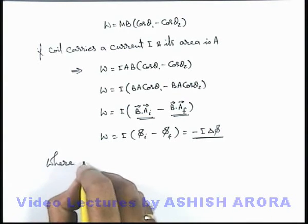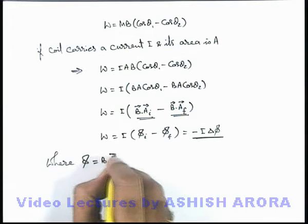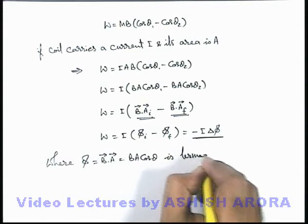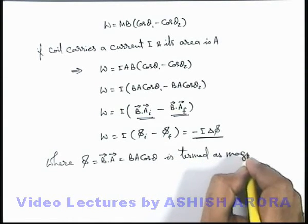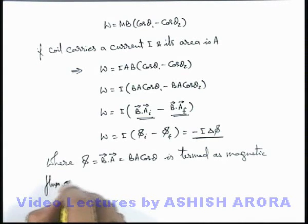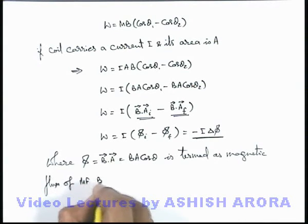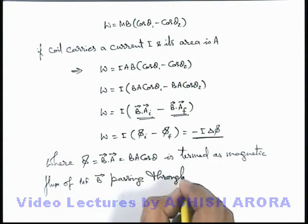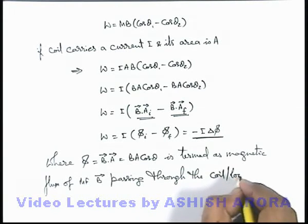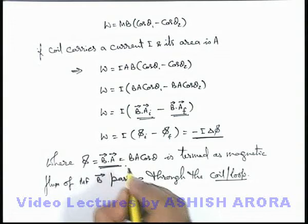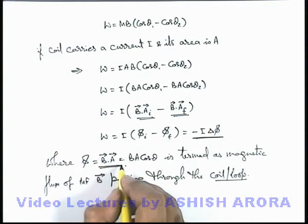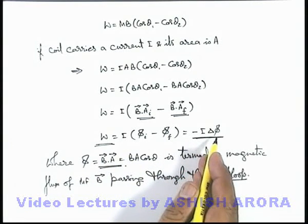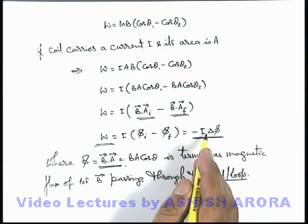Here we can write that flux is B dot A, or it is written as B A cos theta, which is termed as the magnetic flux of the magnetic field induction B vector passing through the coil or loop. This is how magnetic flux is defined, and using magnetic flux we can also find the total work done in changing the orientation of a current-carrying coil or loop in the magnetic induction B.